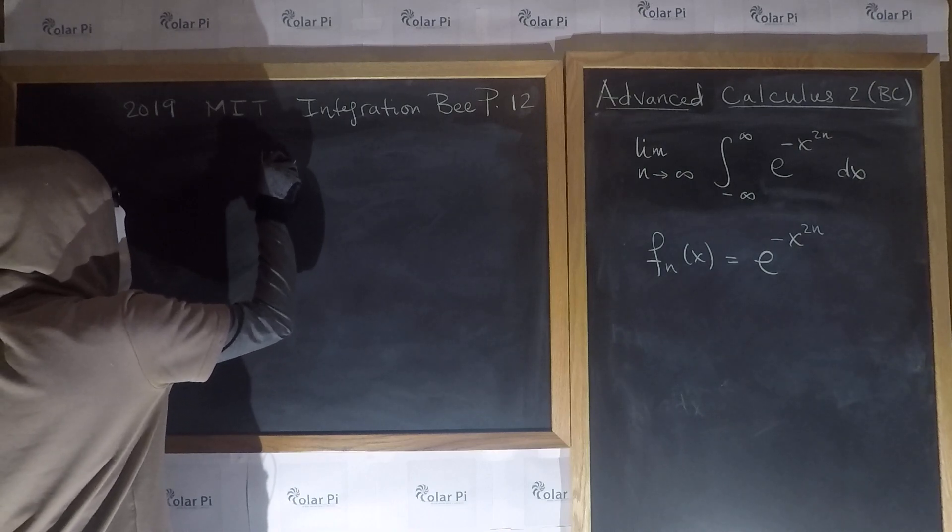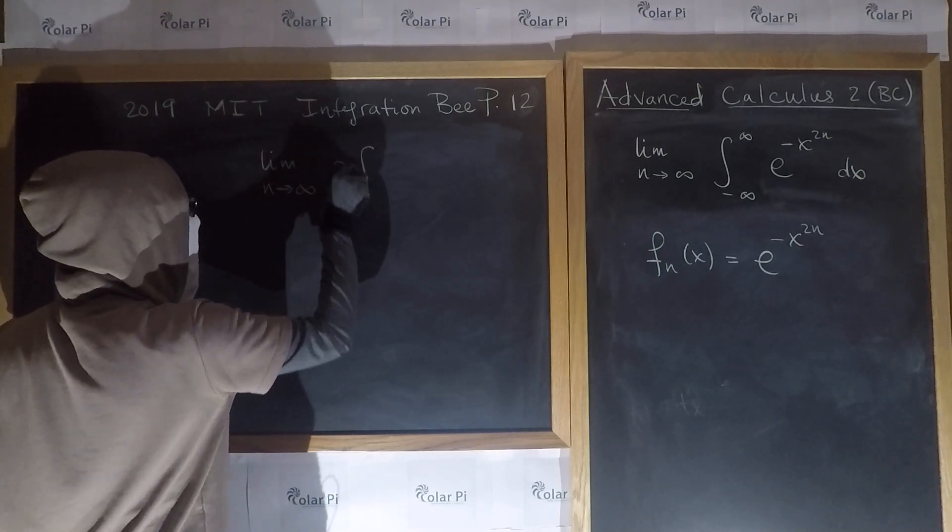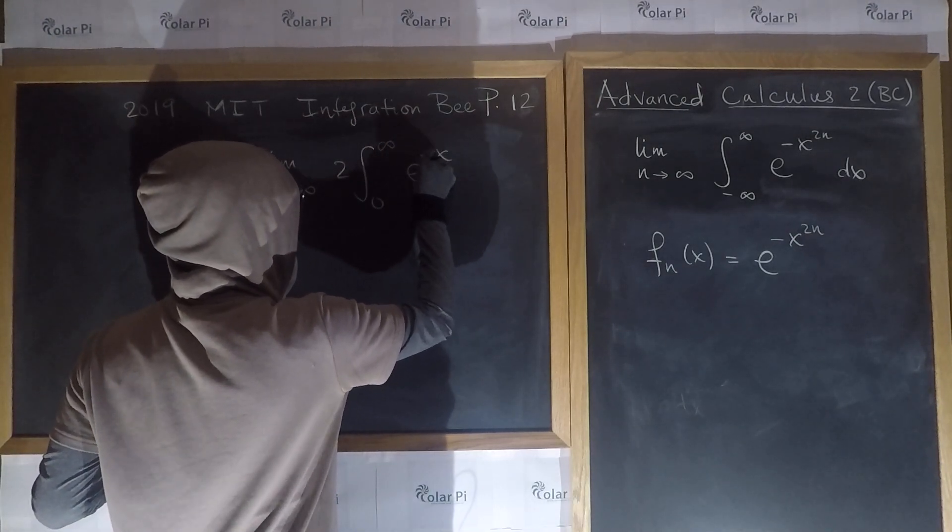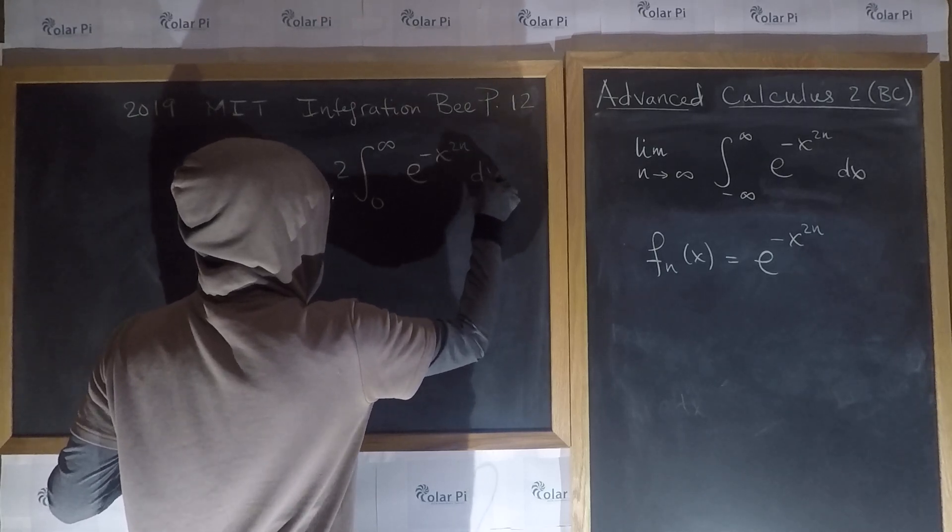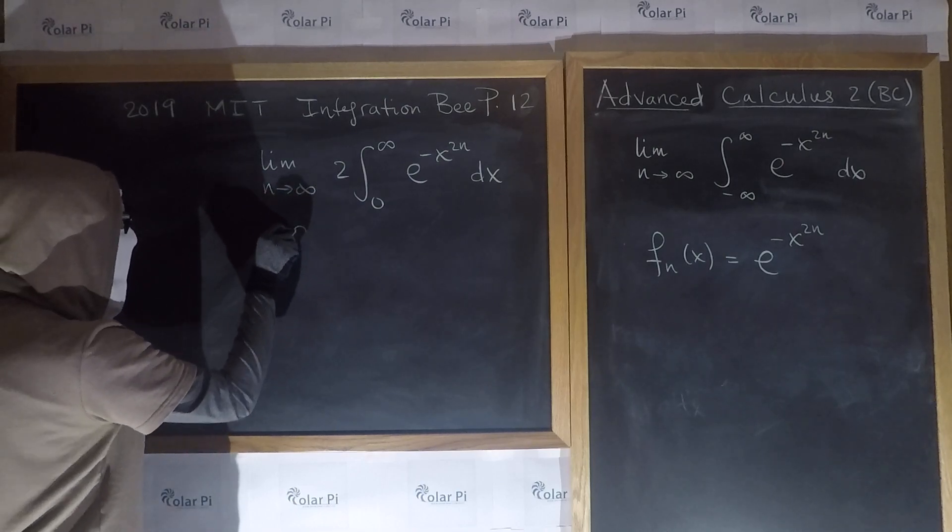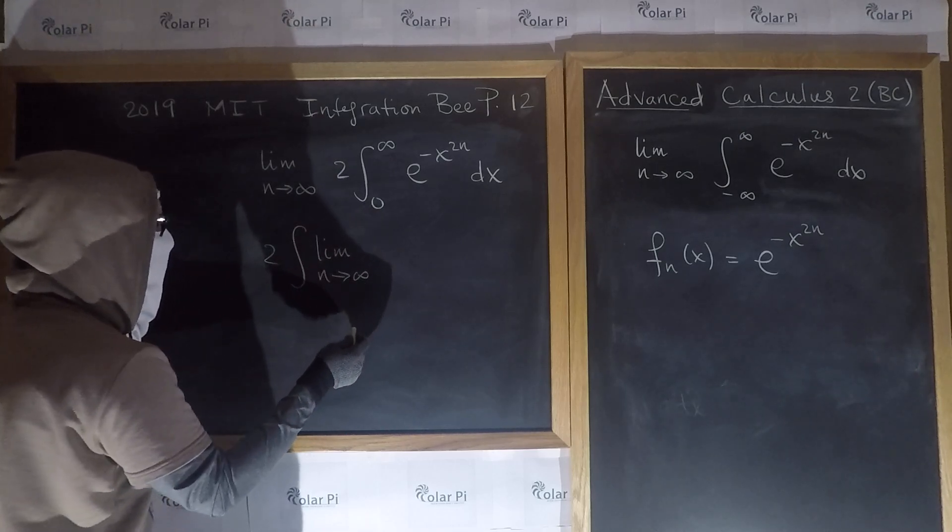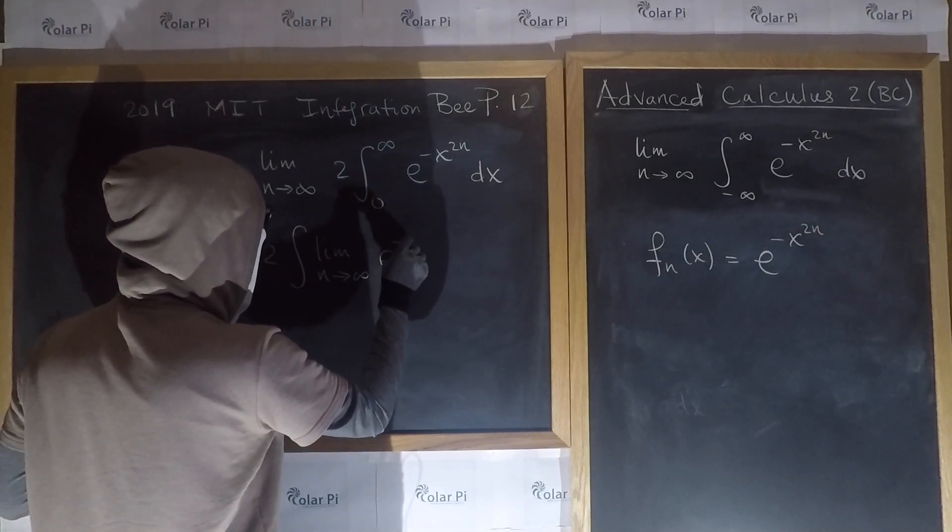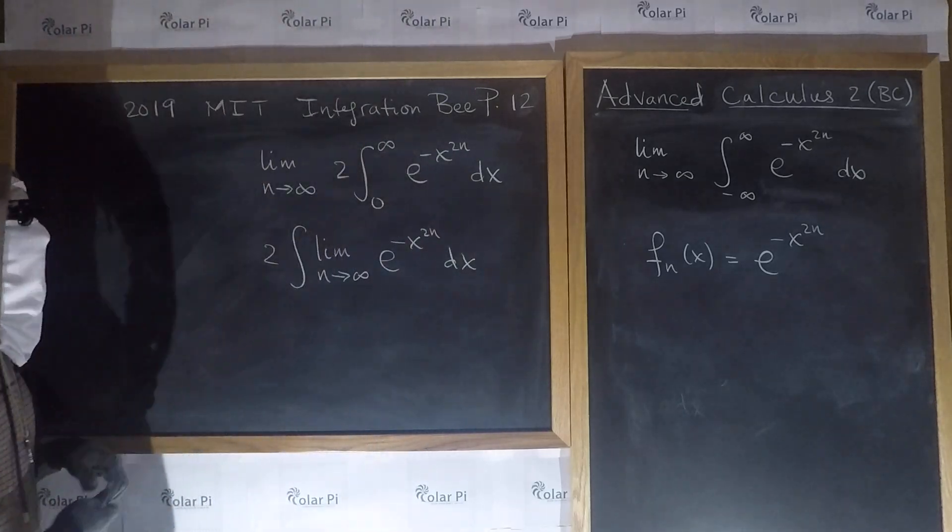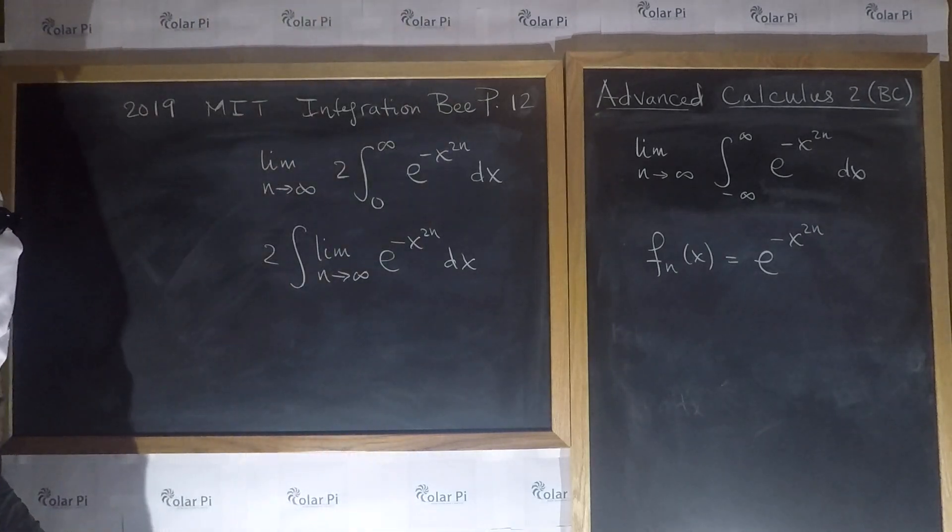we can write the given as, and then next we could do this, which is putting the limit inside of the integral. We're not always allowed this - it's not always allowed. It's allowed when the integrand is uniformly convergent.